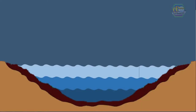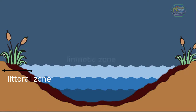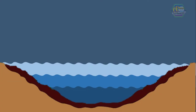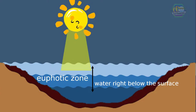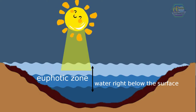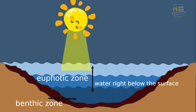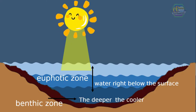There are four different types of lake zones. First is the littoral zone — the area close to the shore of the lake where plants grow. Its opposite is the limnetic zone, which is far from the shore. The euphotic zone is the layer of water right below the surface, where there is still enough sunlight for photosynthesis to happen. And lastly, the benthic zone — the bottom of the lake or pond. The deeper part of the lake is the cooler part, since the sunshine that warms the water is less in the deep.